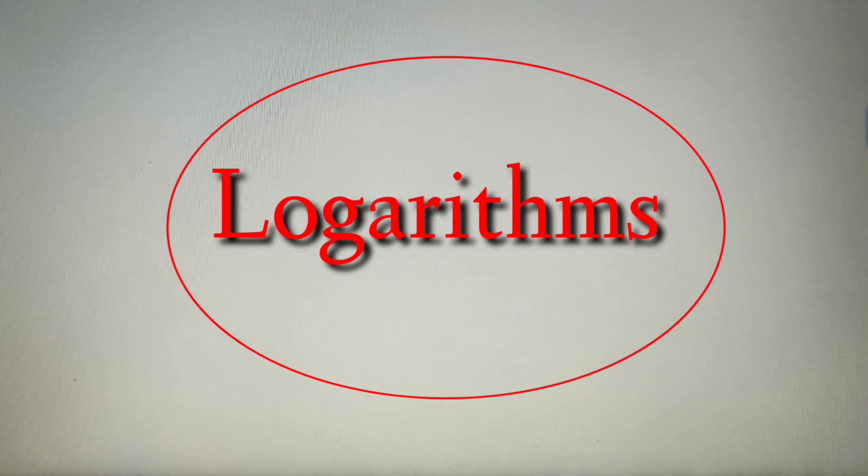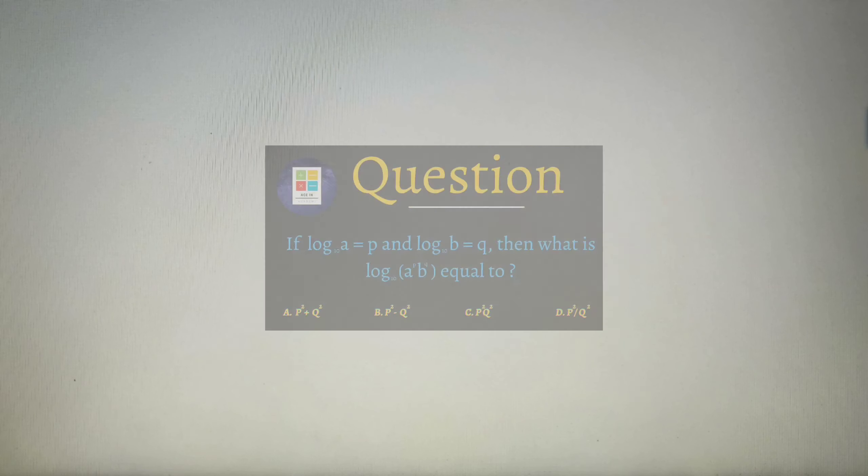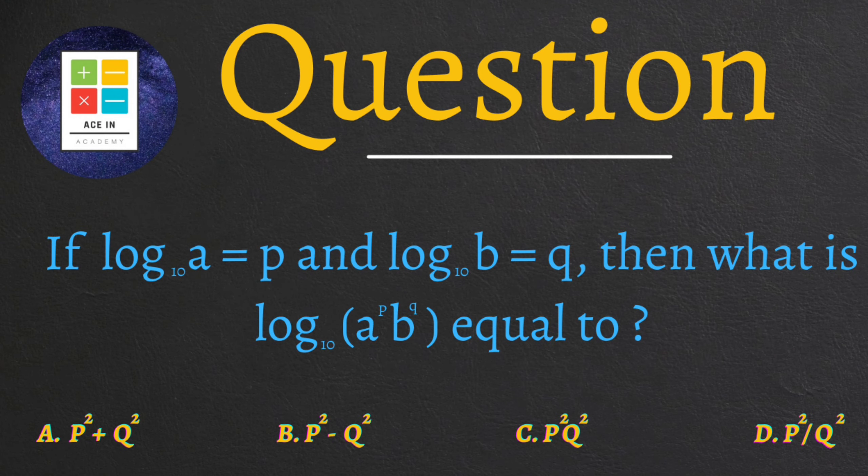in this video we'll solve another question on the topic of logarithms. The question is: if log A to the base 10 is equal to P and log B to the base 10 is equal to Q, then what is the value of log A to the power P into B to the power Q to the base 10 equal to? We're provided with four options: P square plus Q square, P square minus Q square, P square into Q square, and P square by Q square.